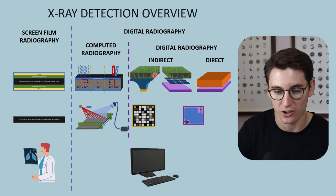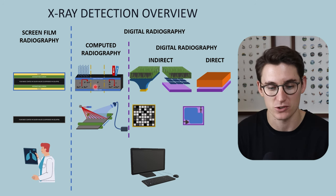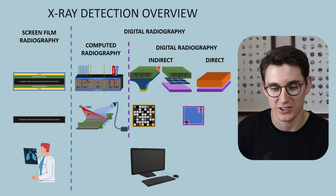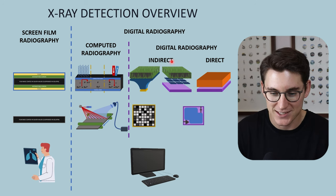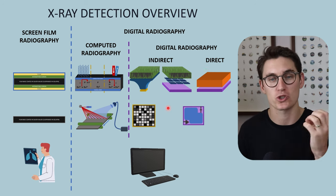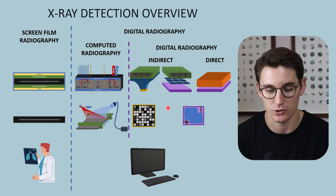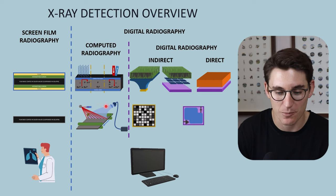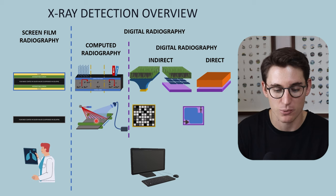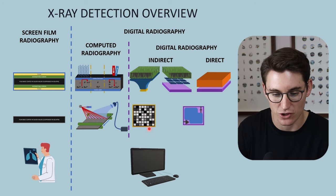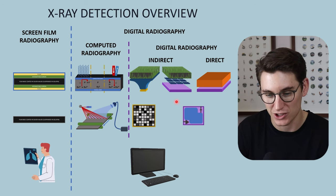We can further subdivide digital radiography into two separate categories, and this is where it sometimes gets a little bit confusing. The first category is known as computed radiography and the second is called digital radiography. The initial 'digital radiography' refers to the end product — a digital image — while this second classification 'digital radiography' refers to the way we process and store our image digitally, using charging capacitors transferred to a computer. In computed radiography, we create a latent image in the cassette that is then manually processed into a digital image, making its processing and storage analog, whereas digital radiography's processing and storage is digital.